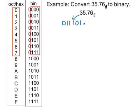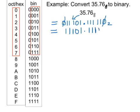Seven in binary is 111, and lastly six as a three-digit binary number is 110. So there I have my answer. A zero at the beginning will make no difference in the size of the number, and a zero at the end makes no difference either. So 35.76 base 8 is equal to 11101.11110 base 2, which simplifies to 11101.1111 base 2.